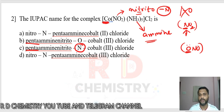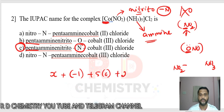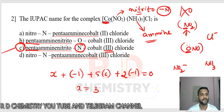We can calculate the oxidation number. Cobalt oxidation number X, plus nitrito NO2 with minus one charge (one ligand, one charge, minus one), plus five amine ligands — NH3 is neutral, zero charge — plus 2 chloride counter ions each with minus one charge: 2 × (−1). Total equals zero. Solving, X equals 3, so Roman numeral III is used. The answer is option C.